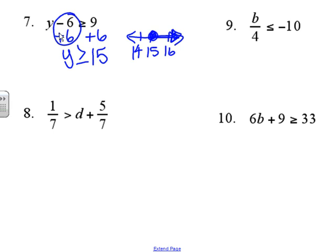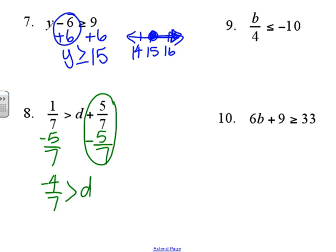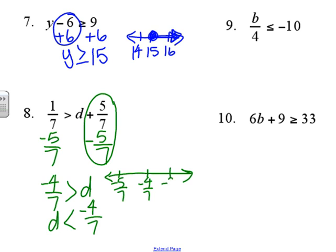Number eight is also a one-step. Don't let the fractions throw you off — it works the same way. We're just going to subtract 5 sevenths from each side. Here's your zero pair — one's positive and one's negative. 1 seventh minus 5 sevenths is negative 4 sevenths, so we can rewrite that as d is less than negative 4 sevenths. That's an open circle with the ray going to the left.